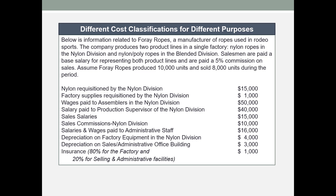The costs listed include: nylon requisitioned by the nylon division, meaning nylon used in the nylon division; factory supplies; wages paid to assemblers in the nylon division; salary paid to the production supervisor in the nylon division; sales salaries; sales commissions in the nylon division; salaries and wages paid to administrative staff; depreciation on factory equipment in the nylon division; depreciation on sales and administrative office building; and insurance, 80% of which is for factory operations and 20% for selling and administrative facilities.